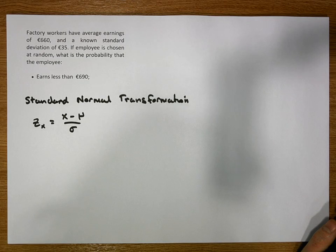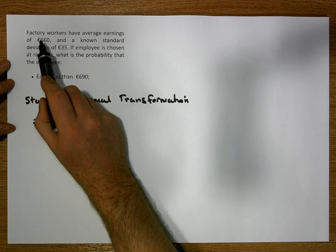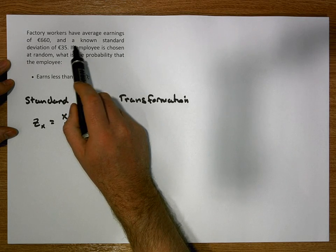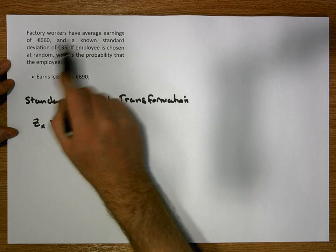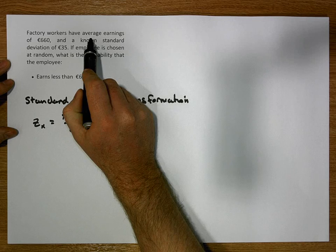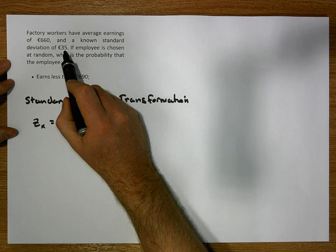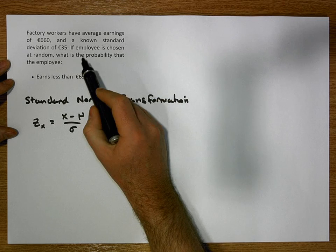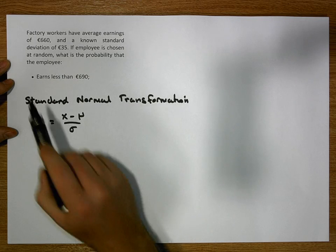We're going to look at a number of scenarios. The first one is: factory workers have average earnings of 660 euros with a standard deviation of 35 euros. This is a statement with respect to the population — the population mean earnings of factory workers. The question asks: if we randomly select an employee from this population, what is the probability that the employee earns less than 690 euros?